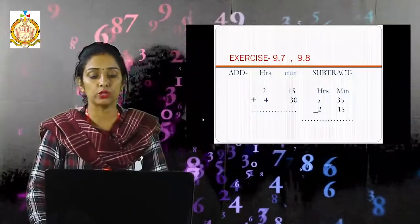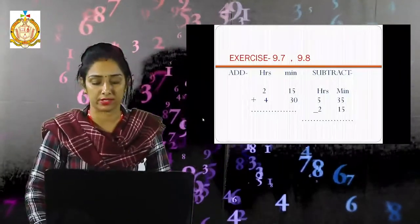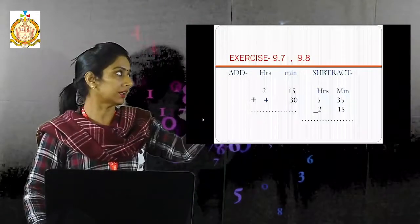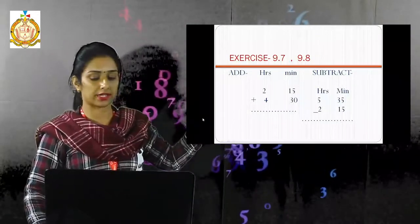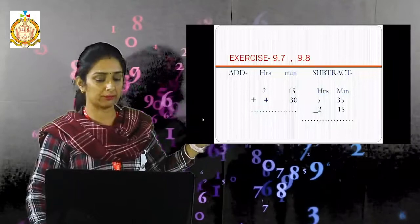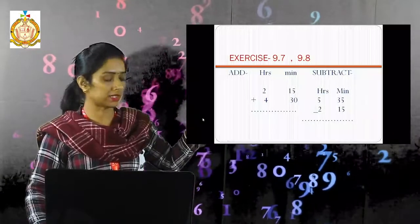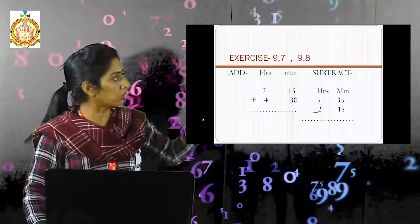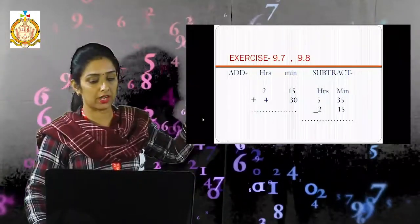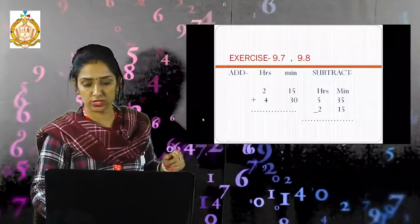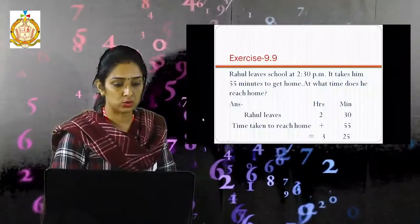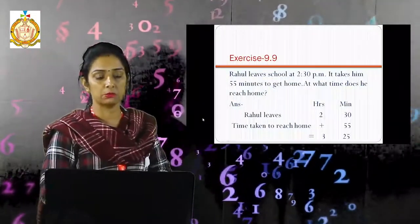Now subtraction. Second question: 35 minus 15 gives 20 minutes. And 5 minus 2 gives 3 hours. So the answer is 3 hours and 20 minutes.